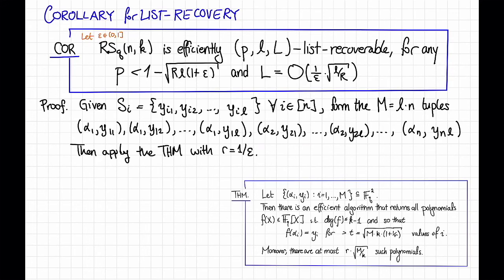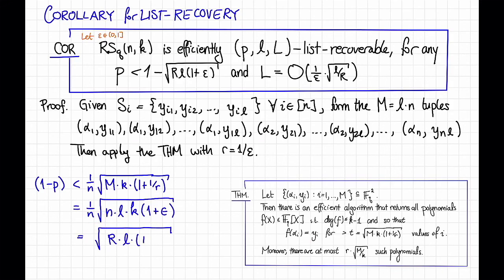In order for that to work, we're going to need 1 minus p to be less than this agreement normalized by n. So that's 1 over n times the square root of m times k times 1 plus 1 over r, which plugging in our definition of capital M and r is 1 over n times the square root of n times l little l times k times 1 plus epsilon. And then pulling this n inside the square root, that becomes equal to capital R, the rate, times little l times 1 plus epsilon, all under the square root. And that's exactly what we got here, once we move this 1 over to the other side.